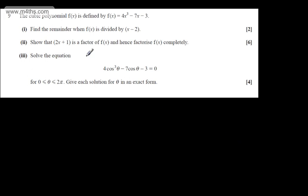This is question number 9. We're told the cubic polynomial f(x) is defined by f(x) equals 4x cubed minus 7x minus 3. In the first part for two marks, we need to find the remainder when f(x) is divided by x minus 2.